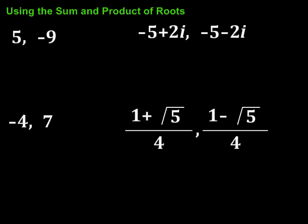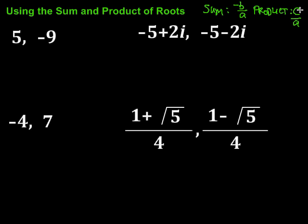In this video we're going to take a look at using the sum and the product of roots to write quadratic equations. It turns out that if we use the quadratic formula, which yields two solutions to any quadratic equation, and take the sum and product of those solutions, the sum simplifies to negative B over A, and the product simplifies to C over A. We can use that to write quadratic equations if we're given the roots — it works for complex roots, roots with square roots, fractions, and all that.